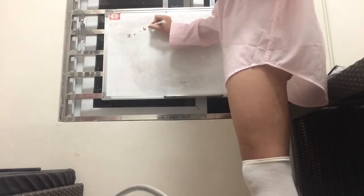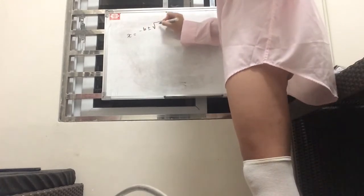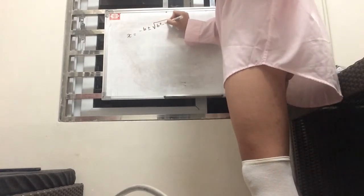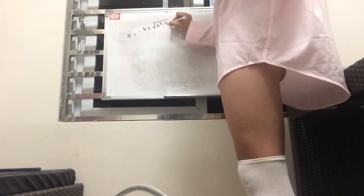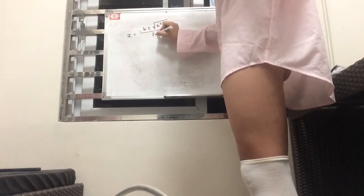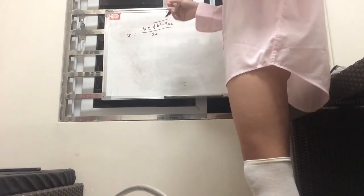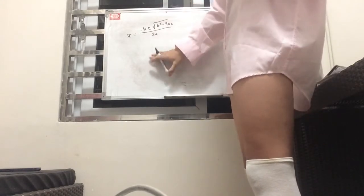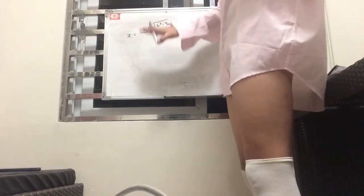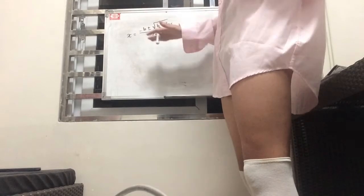And the quadratic formula is simply, x is equal to negative b plus minus square root of b squared minus 4ac, all over 2a. And that over there is your quadratic formula.